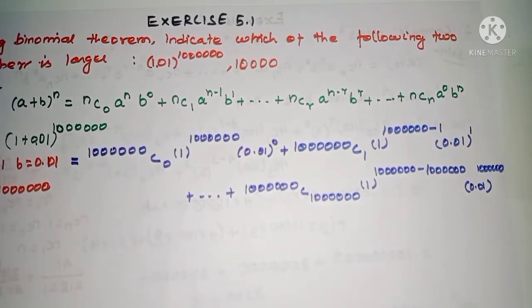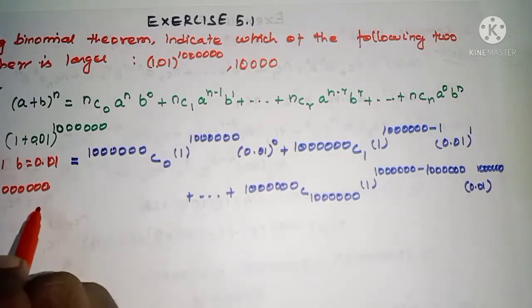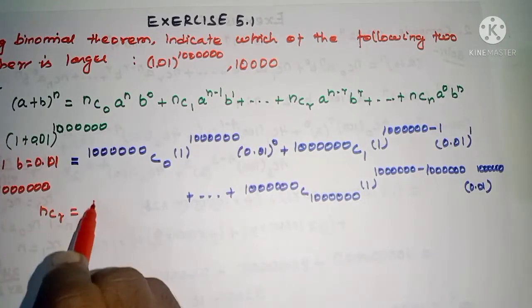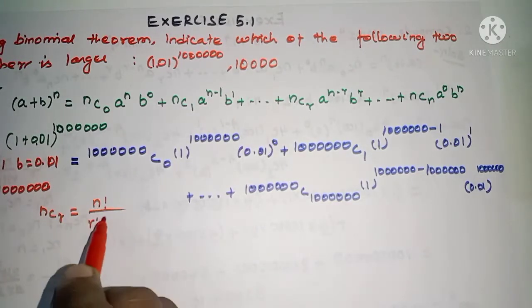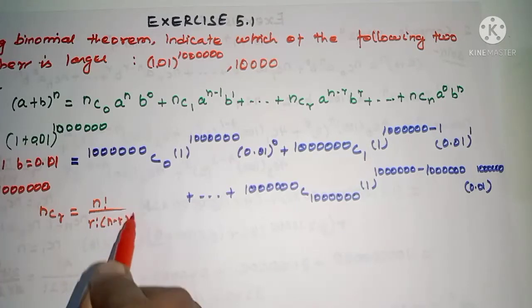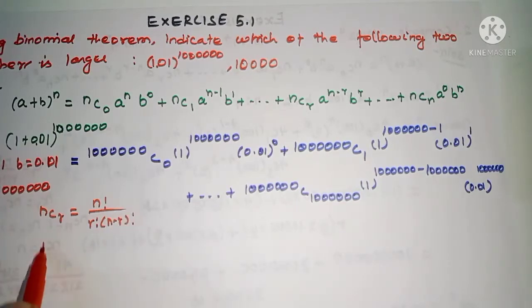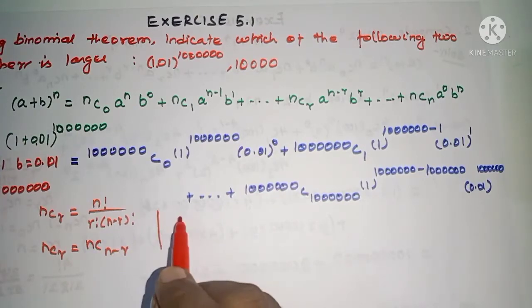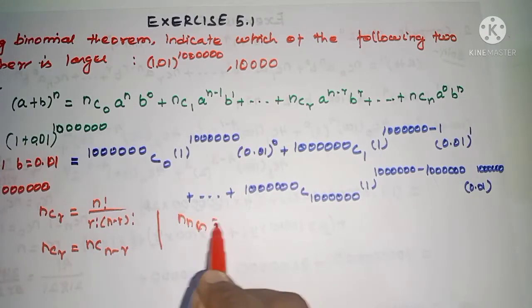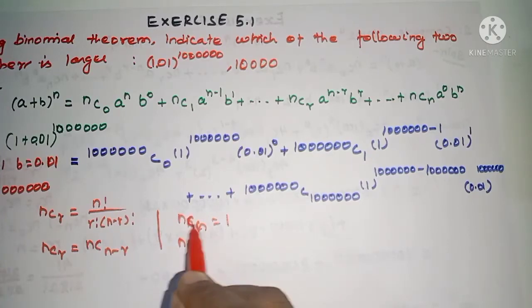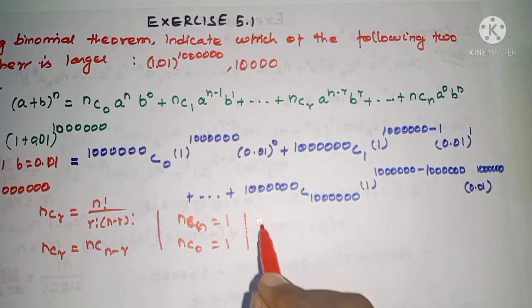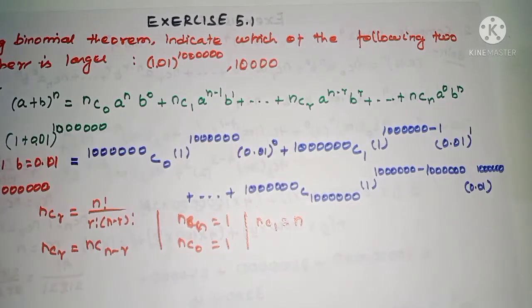We know the identities: nCr = n! / (r! · (n-r)!), nCr = nC(n-r), nCn = 1, nC0 = 1, nC1 = n.